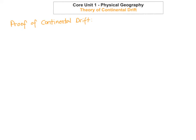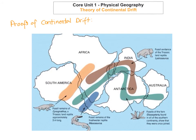The next thing we're going to look at is the proof of continental drift. The first proof is the continental fit. You can see that the coastlines of the continents fit into each other really well — for example, South America fits like a jigsaw piece into Africa, the same with Australia and so on. This gives proof that maybe at one point the continents were all joined together in what we called Pangea.